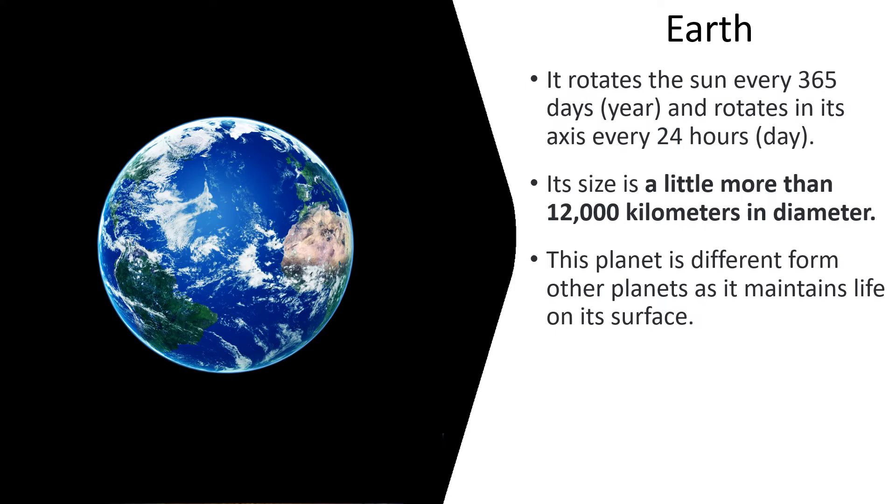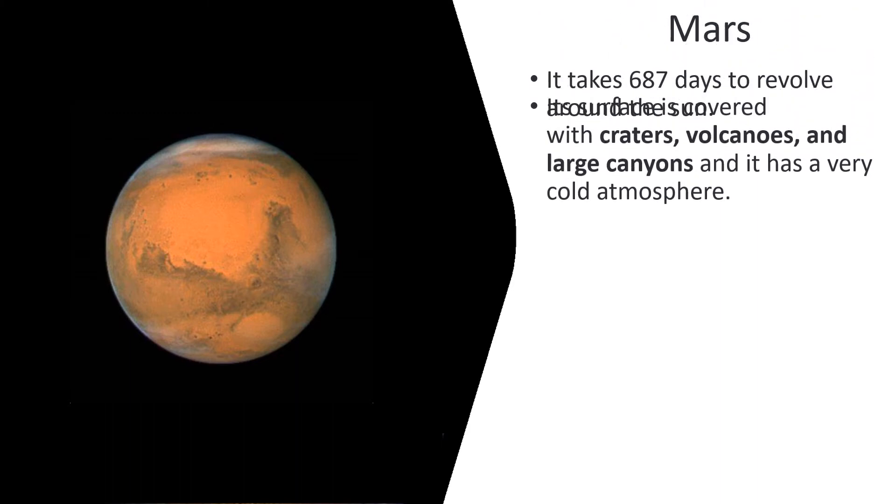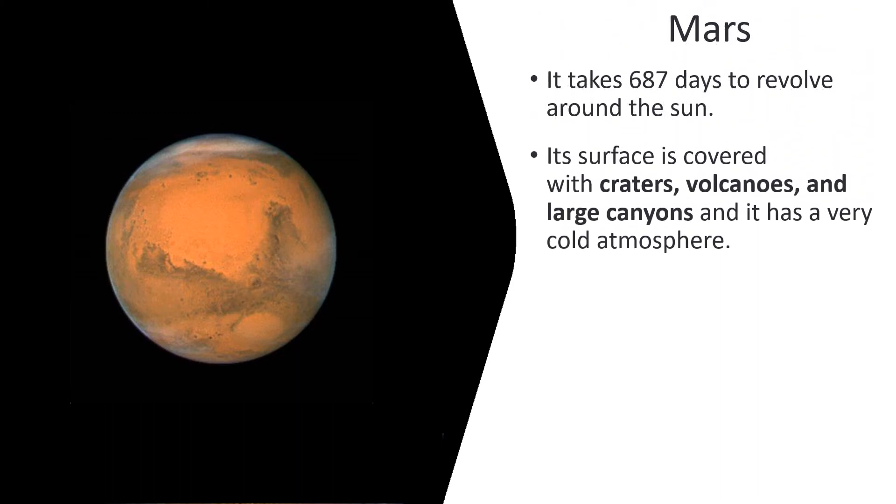Mars. It takes 687 days to revolve around the Sun. Its surface is covered with craters, volcanoes, and large canyons, and it has a very cold atmosphere.